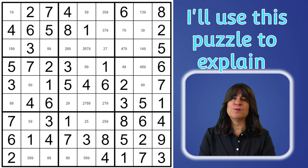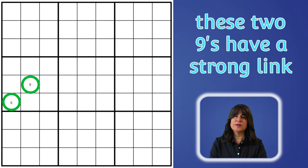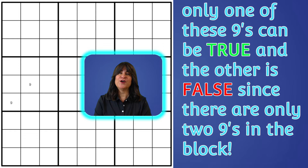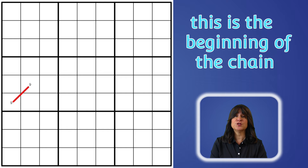Let's take a look at this Sudoku puzzle to explain what an X chain is with three links. I'm going to erase everything except for the two nine candidates in block four. Since these are the only two nine candidates in block four, they are strongly linked. If this nine is true, then the other nine must be false. But if this nine is false, then the other is true. It's very straightforward logic. This is the beginning of the turbofish chain, and we can draw a line between the two nines in block four to show that there is a strong link between them.